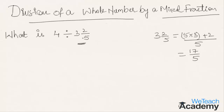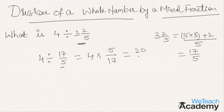Hence, this becomes 4 divided by 17 by 5. This equals 4 multiplied by the reciprocal of the improper fraction — the reciprocal of 17 by 5 is 5 by 17. So, 4 5's are 20 by 17. The denominator always remains the same. Hence, 20 by 17 is the result of 4 divided by 3 and 2 by 5.